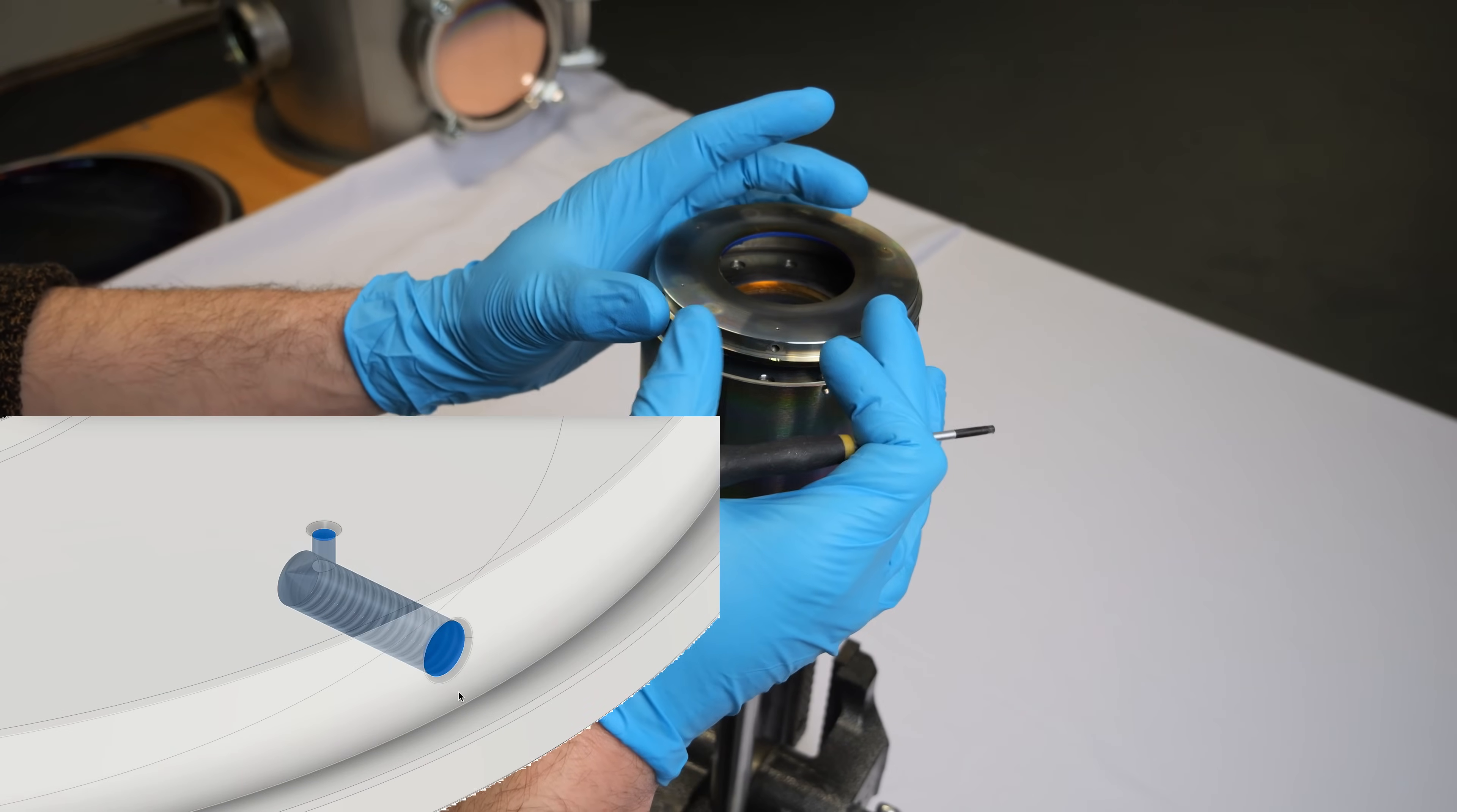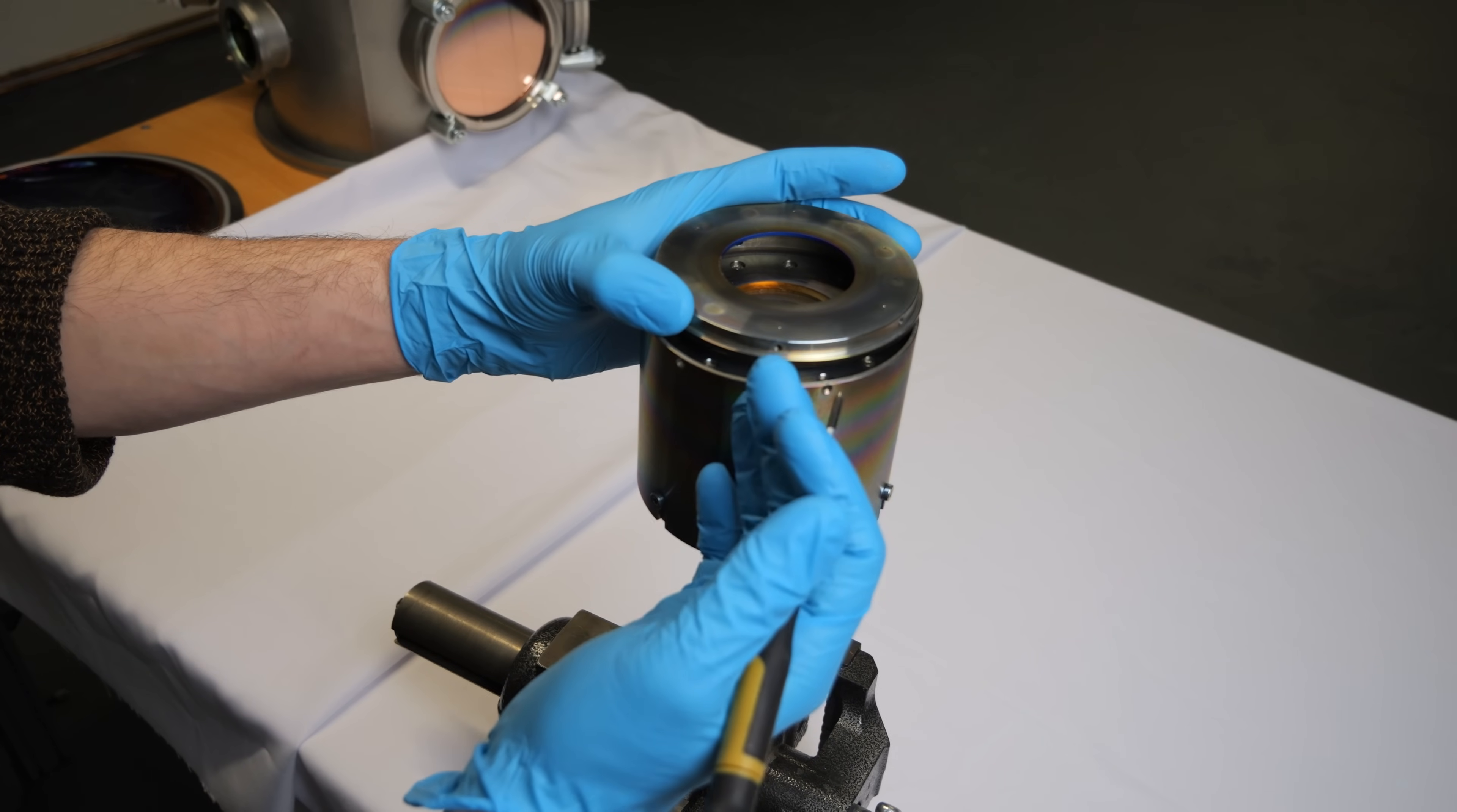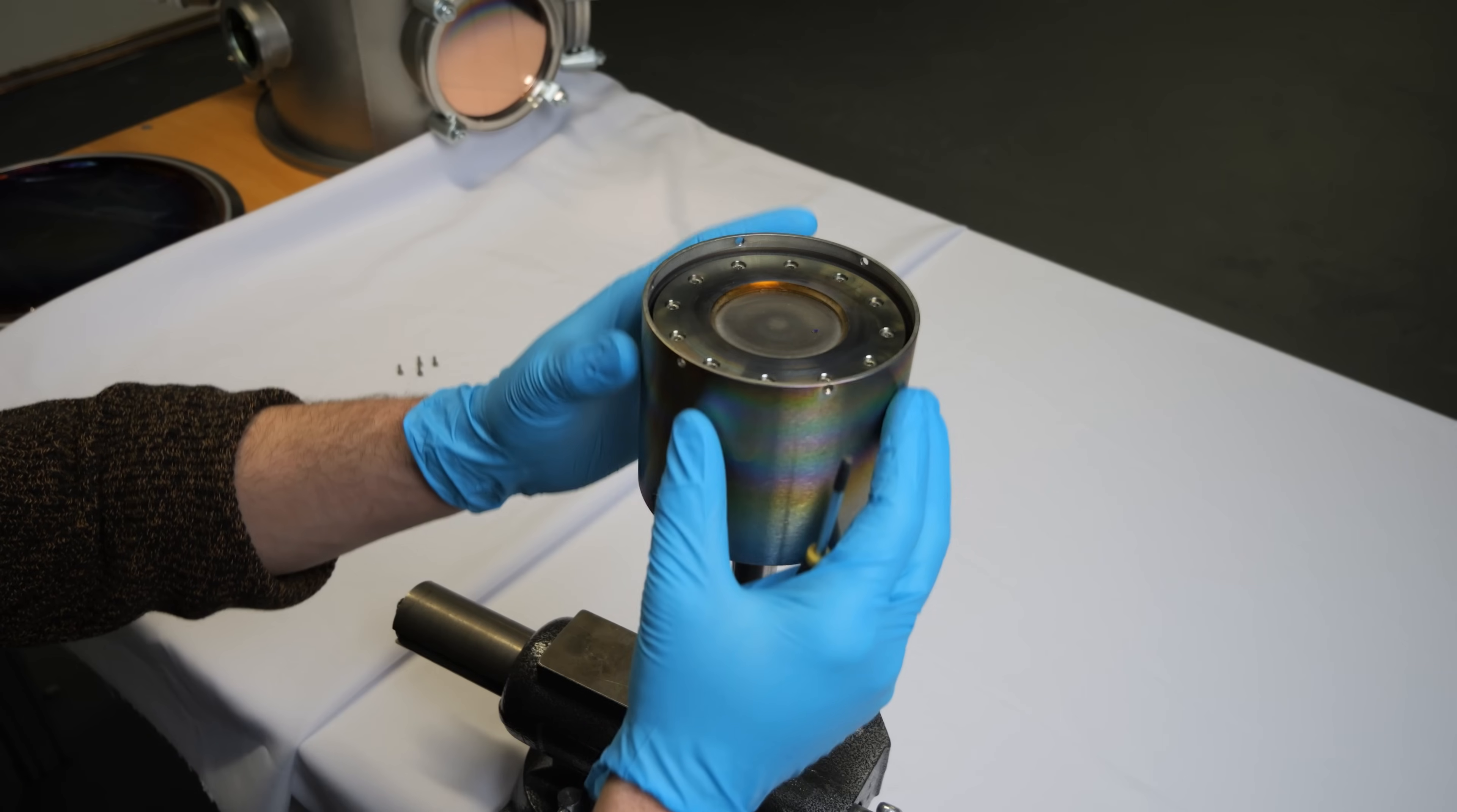They are meant as vent holes so we don't have any virtual leaks. If you have an enclosed space in a vacuum system which is not sealed by for example an o-ring, the air which is trapped in this hole will diffuse out of the threads slowly and basically contaminate your vacuum. By creating a separate pathway through which the air can escape you basically alleviate that issue.